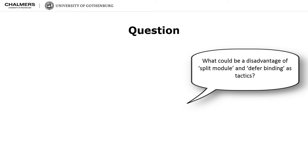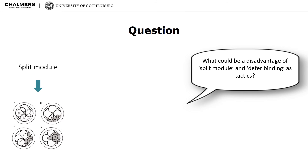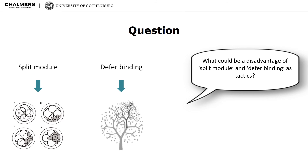Here is a question for reflection: What could be a disadvantage of split module and defer binding as tactics? Split modules may lead to over-fragmentation of software units, which may compromise comprehension. Implementing deferred binding might be complex and expensive. We want to bind as late as possible, as long as the mechanism that allows it is cost-effective.